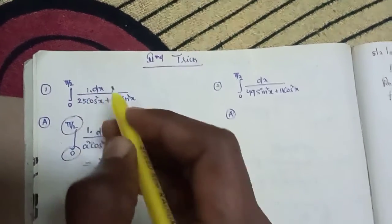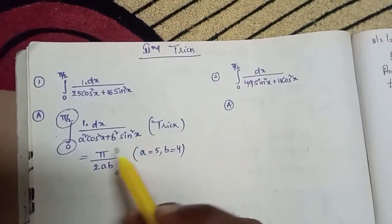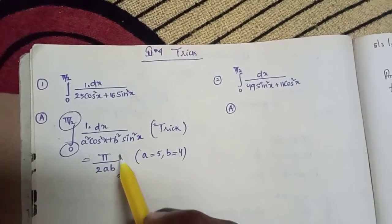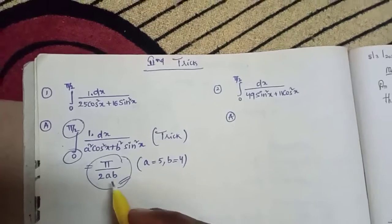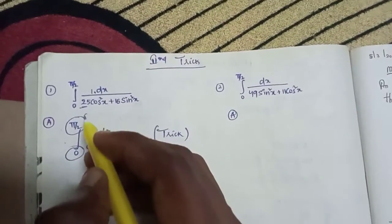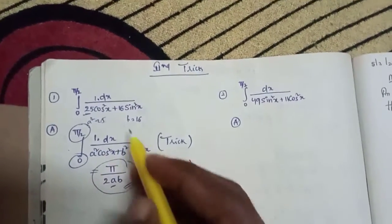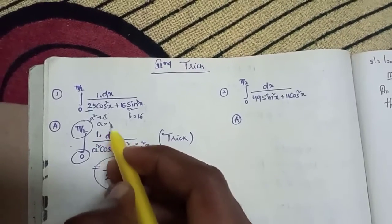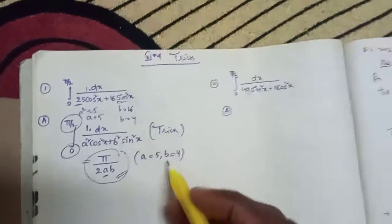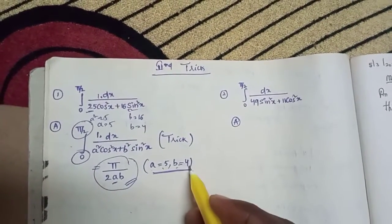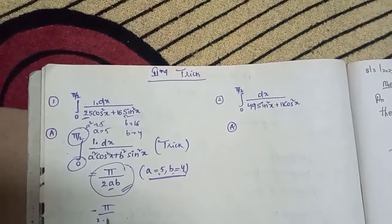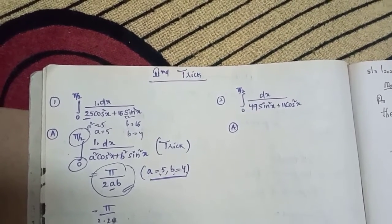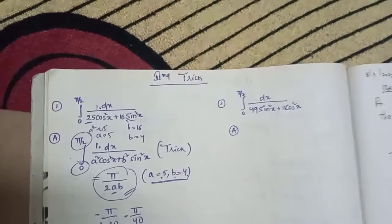The integral dx from 0 to π/2 uses the formula π/(2ab). Here, a² is 25 and b² is 16, so a is 5 and b is 4. Therefore, the answer is π/2 into 5 into 4, which equals π/40. This is the answer.